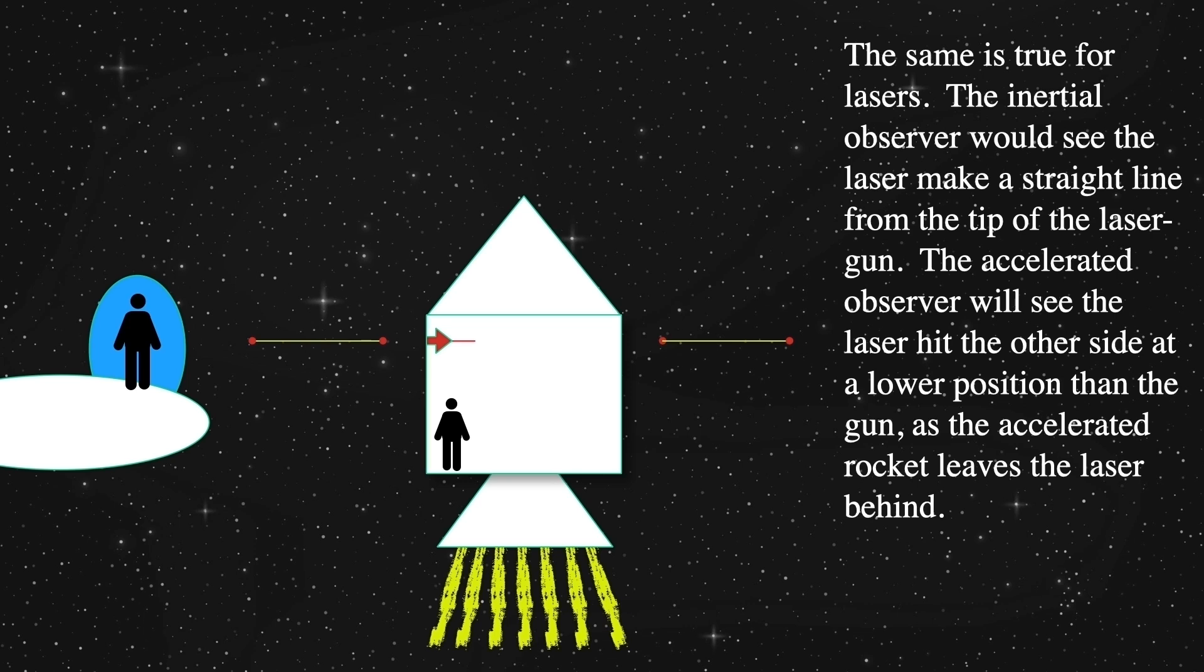While it's in flight, it is not attached to the rocket anyway, so the laser will travel in a straight line along the lines of the batons. Without the rocket there, the laser would go from one baton to the other.